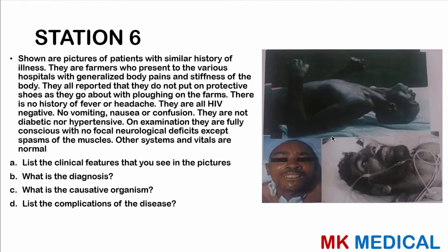Station 6. Shown are pictures of patients with similar illness — farmers who present to various hospitals with generalized body pains and stiffness, reporting they do not wear protective shoes when plowing their farms. There is no history of fever, headache, vomiting, nausea, or confusion. They are HIV negative, not diabetic, not hypertensive. On examination they are fully conscious with no focal neurological deficits except muscle spasms. List the clinical features, diagnosis, causative organism, and complications. Think through this — give yourself a pat on the back if you get it right.